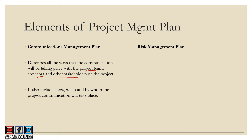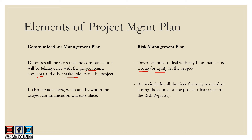The next document is the risk management plan, the output of the plan risk management process. This document describes how your project team is going to deal with anything that can go wrong on the project, as well as opportunities — things that happen unexpectedly in your favor. It also includes a list of risks that may materialize during the project, captured in a risk register document, which is itself part of the risk management plan, which in turn is part of the project management plan.